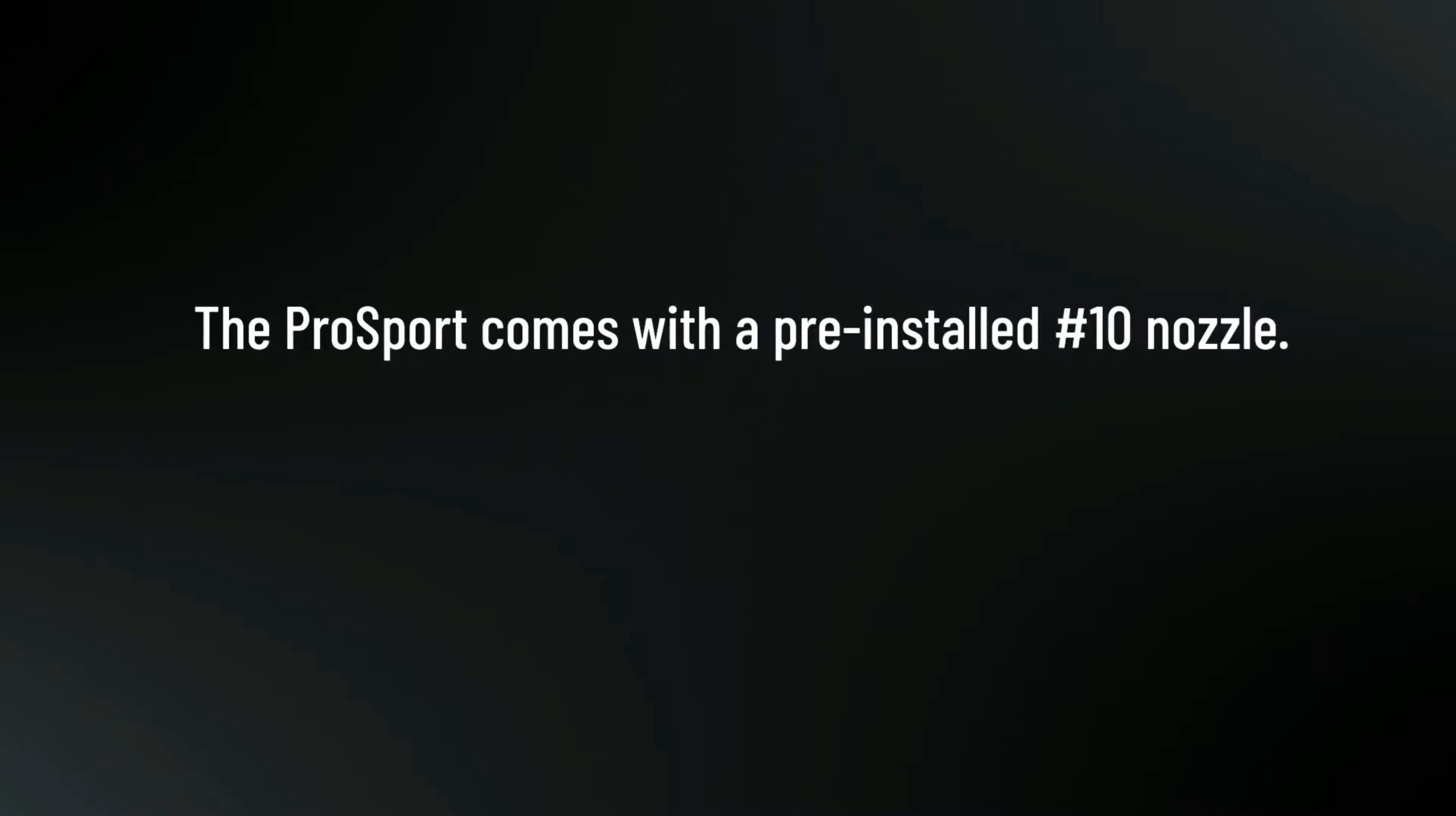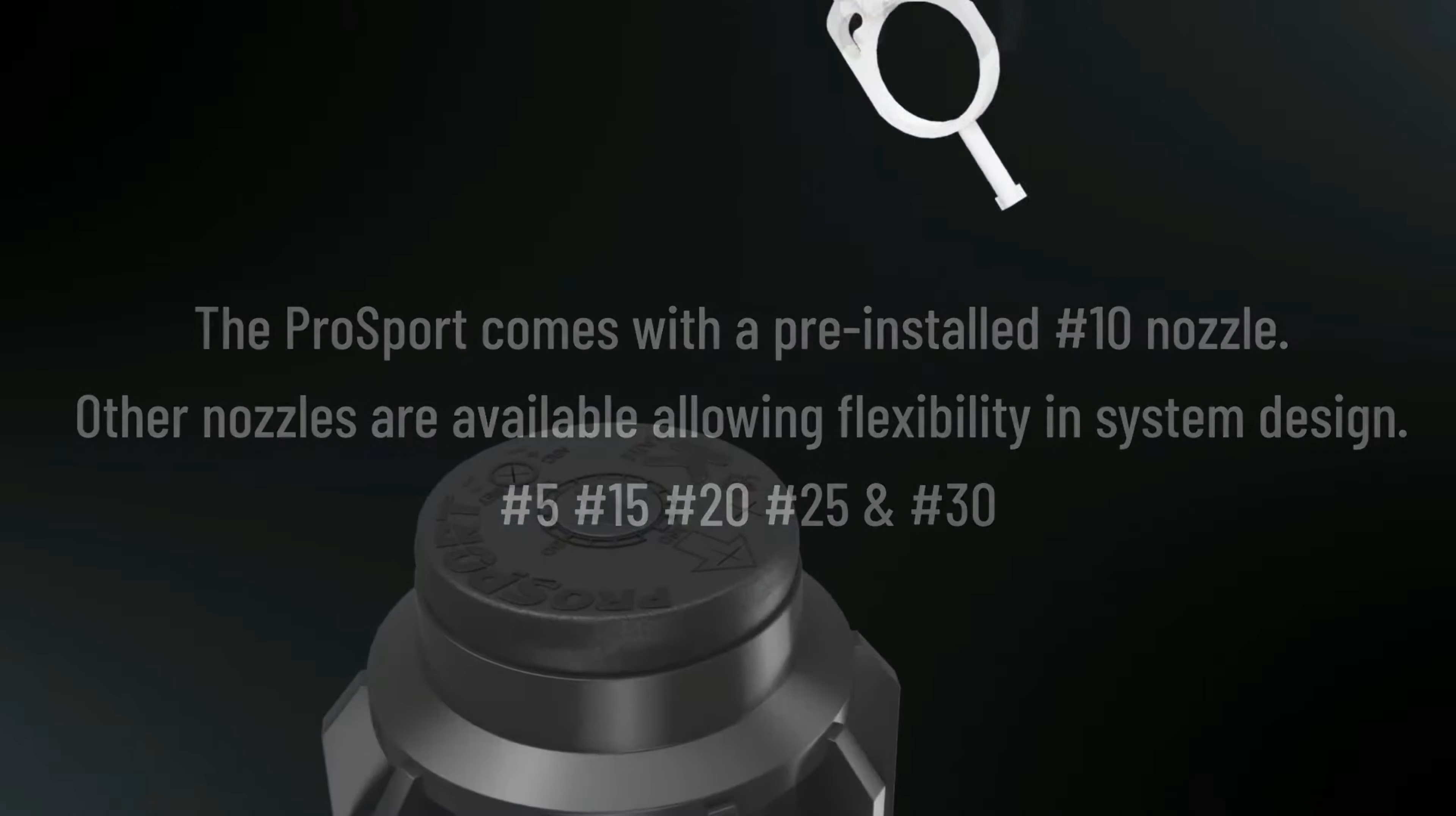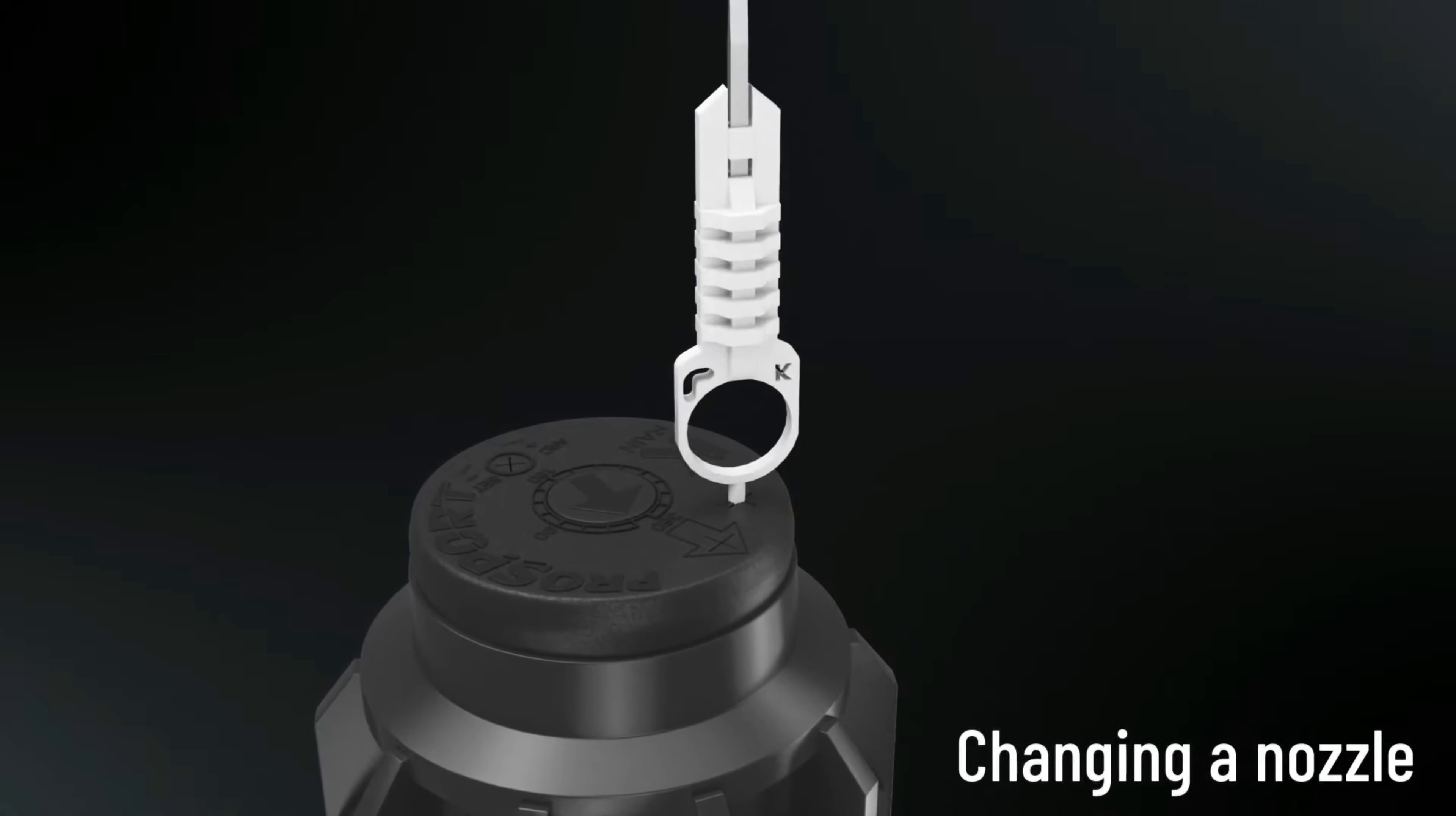The ProSport comes with a pre-installed number 10 nozzle. Other nozzles are available, allowing flexibility in system design. Insert the plastic end of the key into the keyhole on top of the turret and turn the key one-quarter turn to ensure that the key does not slip out of the keyhole.